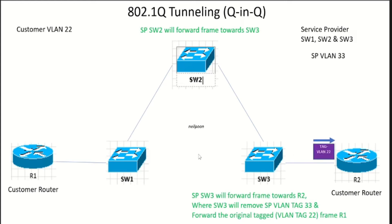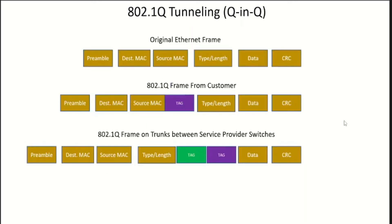This is how Q&Q actually works. If you want to see how the frame looks: originally, from an untagged Ethernet frame there's no tag. When the customer's tagged frame with VLAN 22 comes from Router 1, it adds this tag. As soon as it reaches the service provider network, the service provider will add the second tag — that's the one shown in the green box. This is how it looks between Switch 1, Switch 2, and Switch 3.